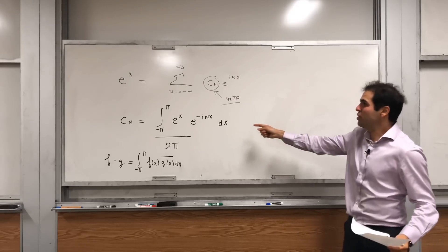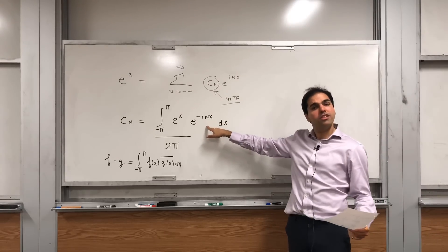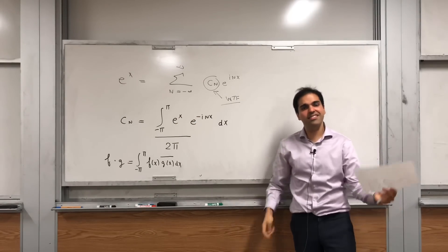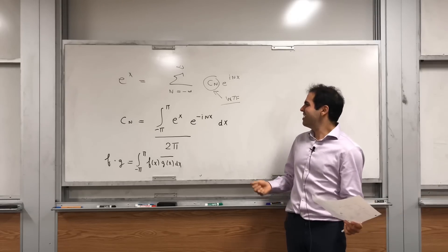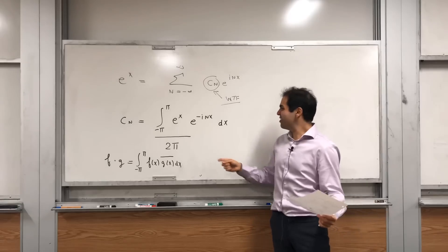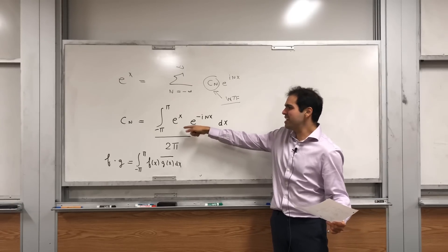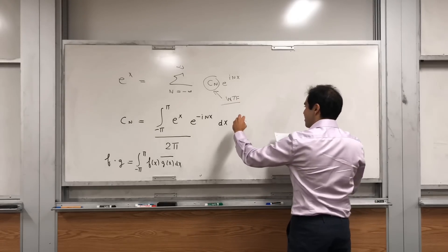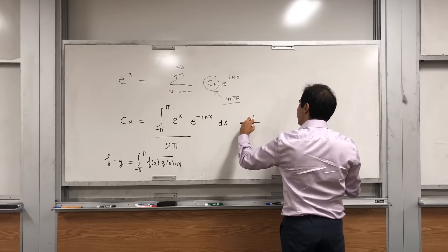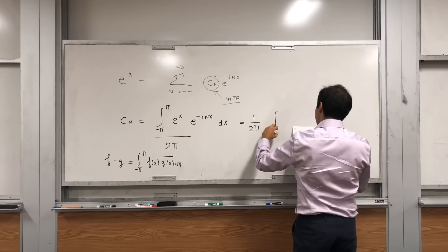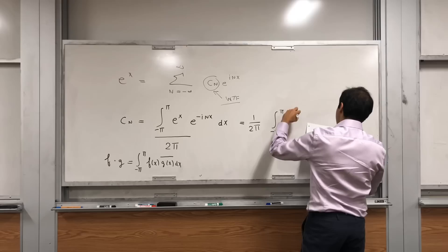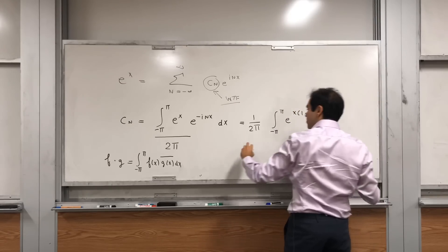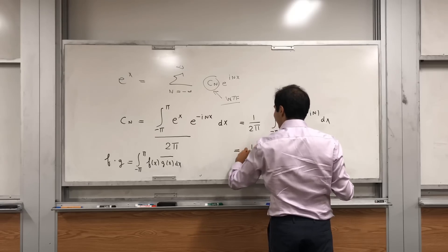Why was it useful to use exponentials instead of trig? Because otherwise you'd have to integrate e to the x times cosine nx, which is possible but a bit more difficult. But here, e to the x combines nicely with e to the minus inx, so all we're left to integrate is 1 over 2 pi times the integral from minus pi to pi of e to the x times (1 minus in) dx.